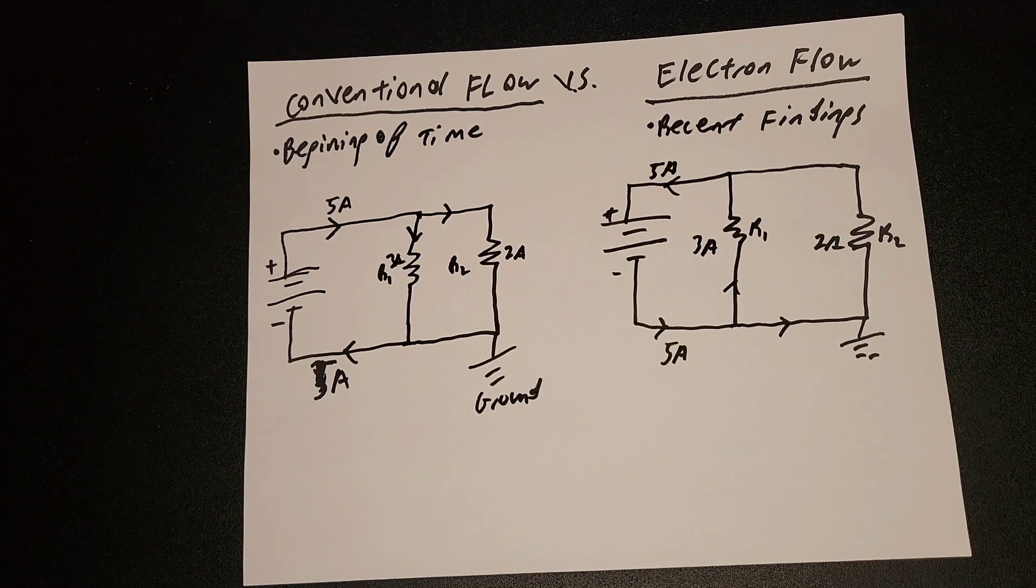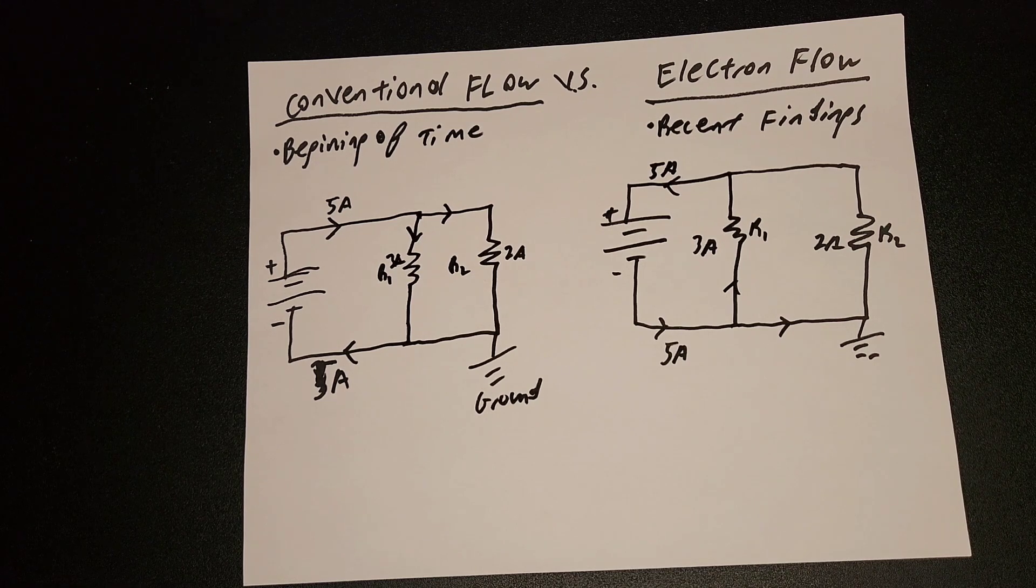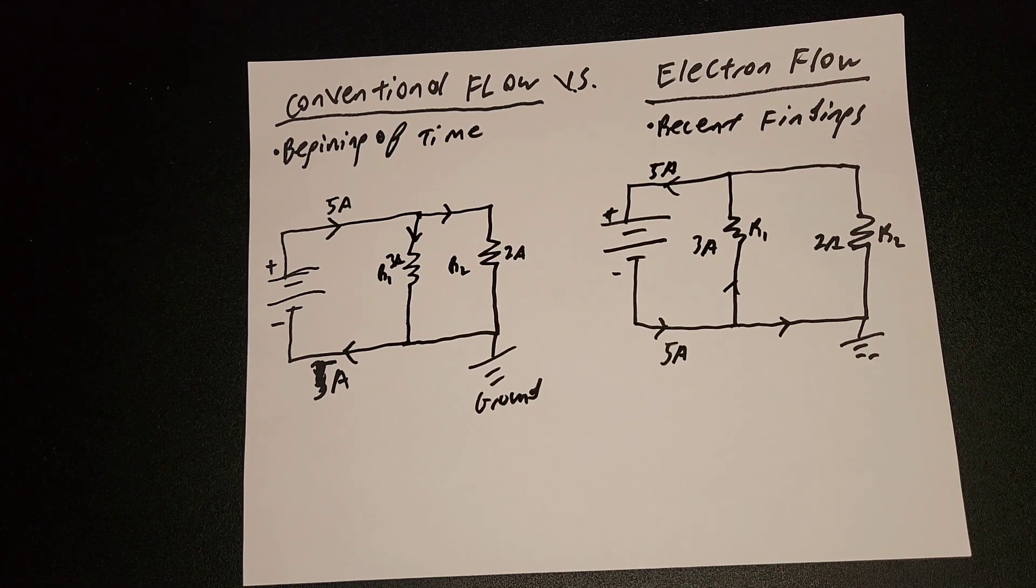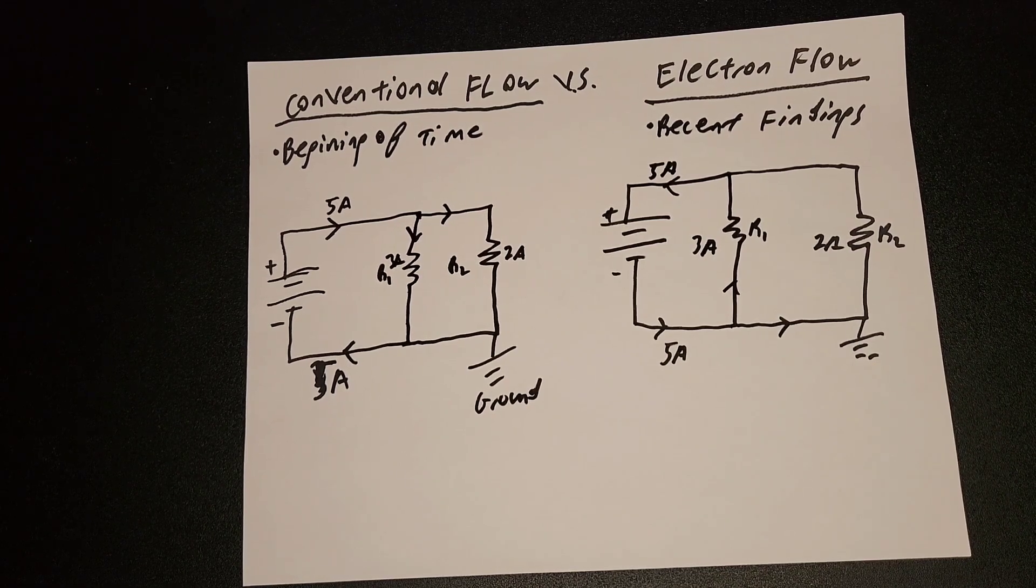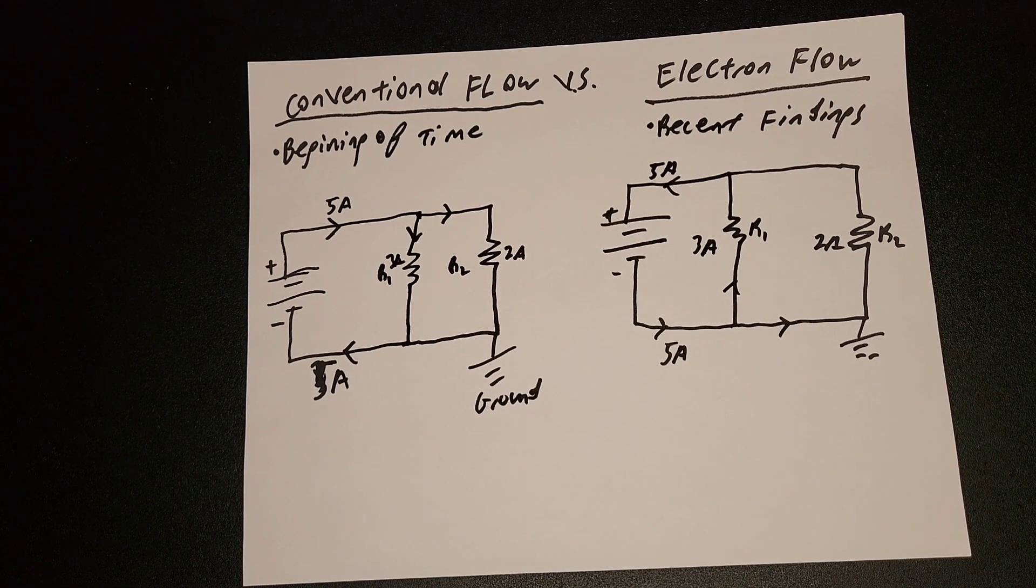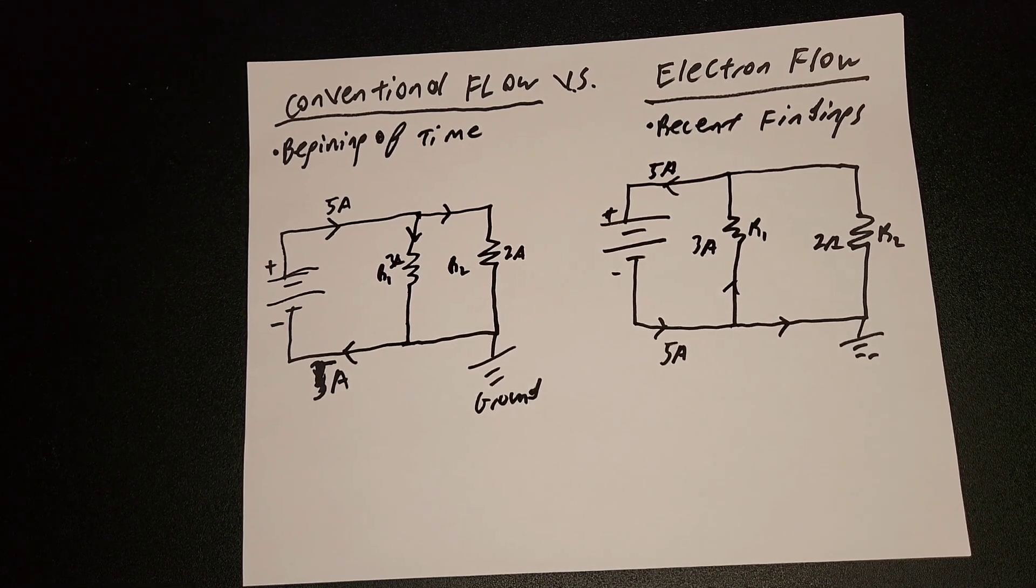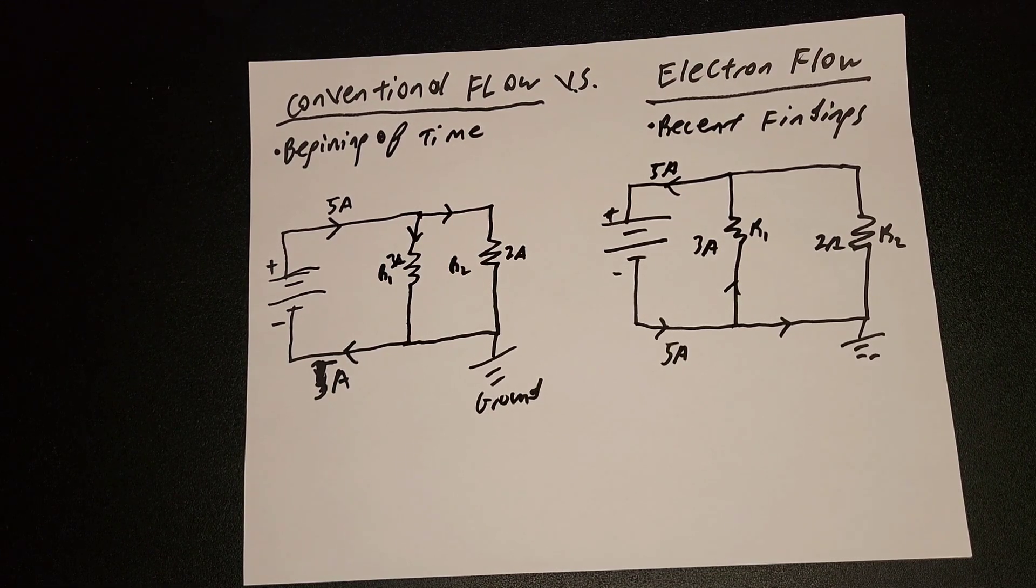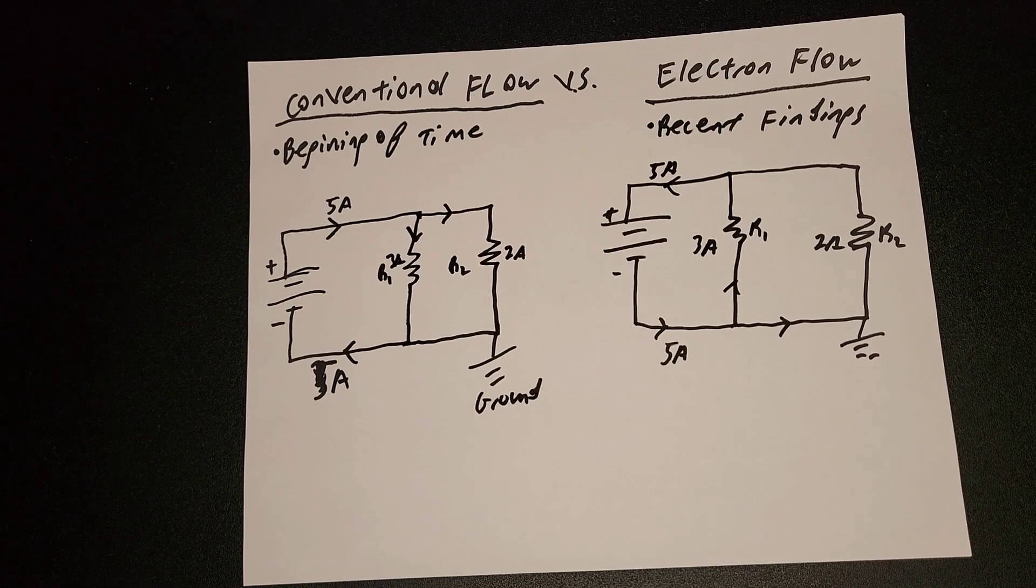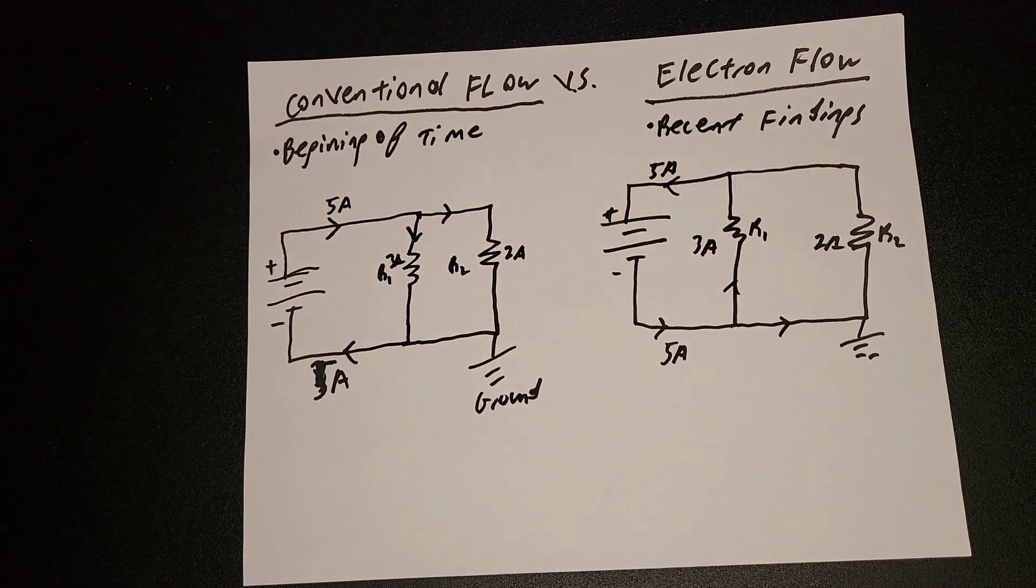So what is also important: when you are speaking of current flow, it's good to state which one you are referring to. If you're going to say from positive to negative, make sure to state that that is conventional flow. And if you're referring to negative to positive, please state that you are working with electron flow. So whoever you are communicating with, you guys can be on the same page.